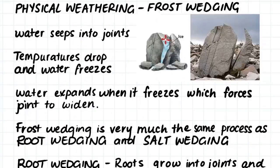Now we'll talk about frost wedging, root wedging, and salt wedging. Frost wedging occurs when water seeps into the joints of a rock. When water freezes it expands, so if liquid water has infiltrated the joints in a piece of solid rock during the day, then night falls and it is so cold that the water freezes and expands. This expansion forces the crack wider apart, causing a larger opening in the rock. This repetitive freeze-thaw cycle can cause boulders to break off cliff faces and can speed up the pace of weathering.